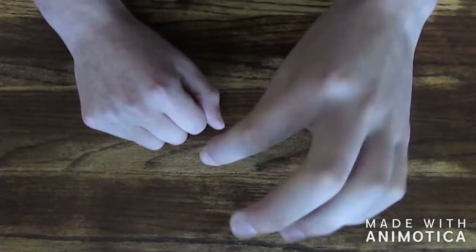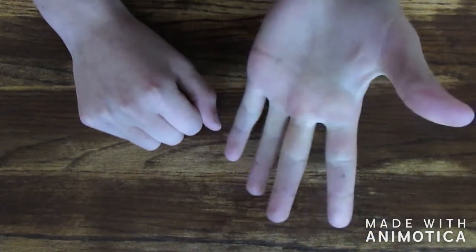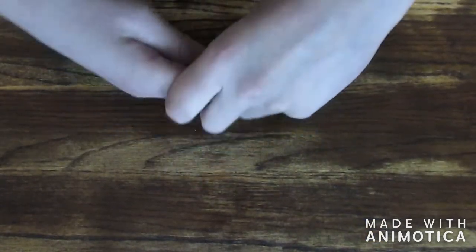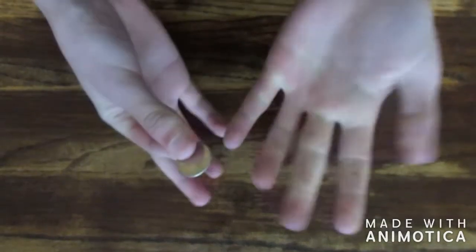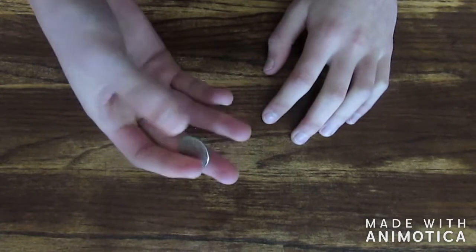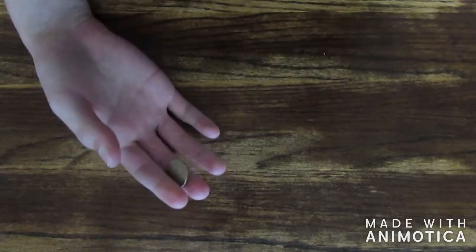the coin and it actually vanishes. And you know what, if I want it to reappear I can actually just pull it right out of my hand. So that is what the vanish looks like. Stick around for the tutorial.